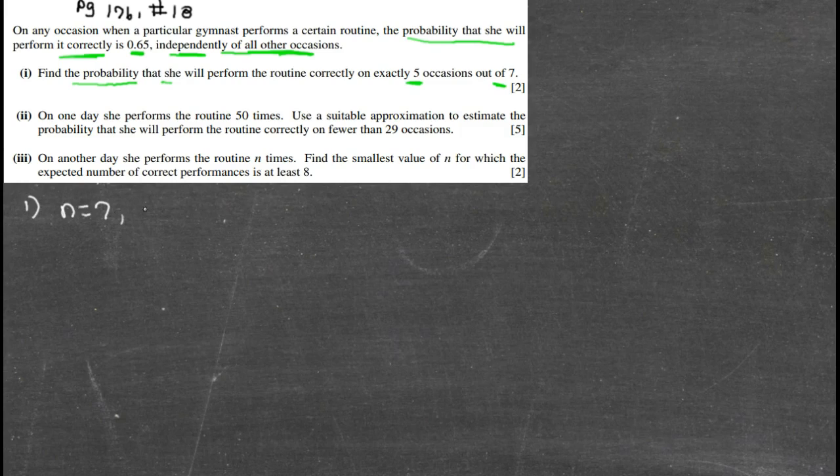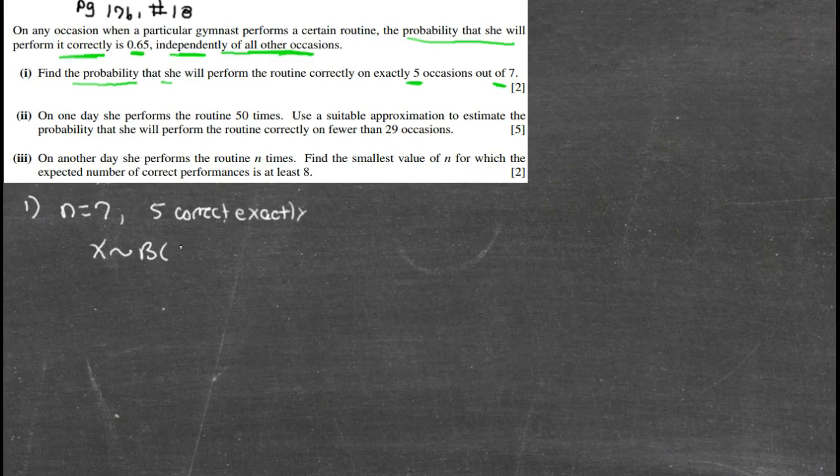Let's go ahead and put our information together. We get n = 7 trials and we want to know the probability of getting exactly five correct. Well, if it's a binomial distribution that meets all the requirements, there are seven trials and then P is going to be 0.65. That's the probability of a success.